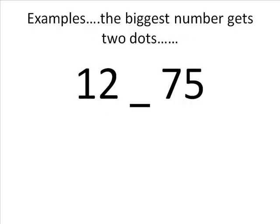Let's look at another example. Here we've got 12 and 75. If we put the two dots next to the 75, which is the biggest number, and then one dot next to the 12, which is the smallest number, we can connect the dots together and create our symbol, which is a less than symbol. So 12 is less than 75.